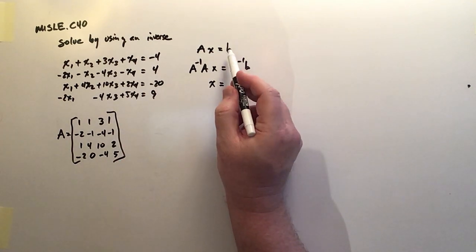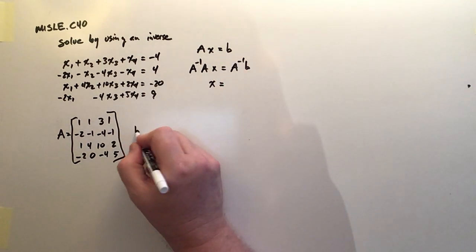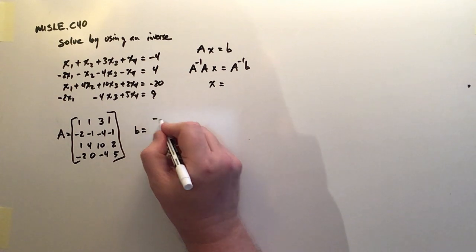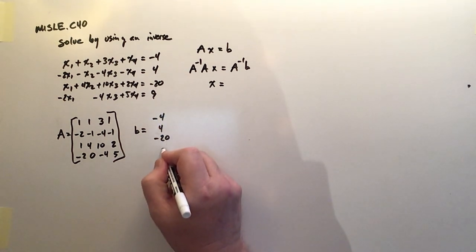And then, of course, we're saying it's equal to the solution matrix. So the solution matrix is B, and that's negative 4, 4, negative 20, and 9.